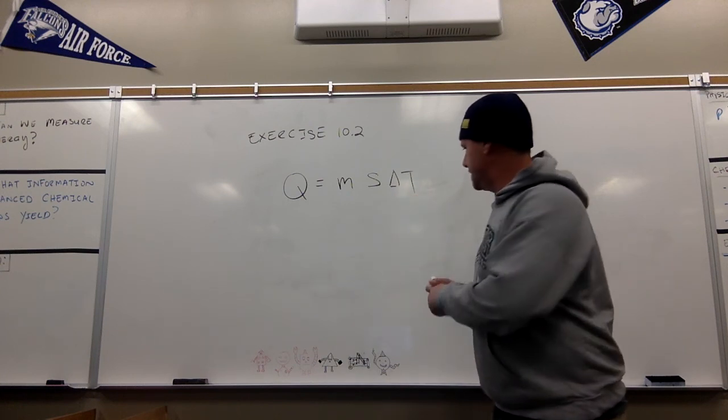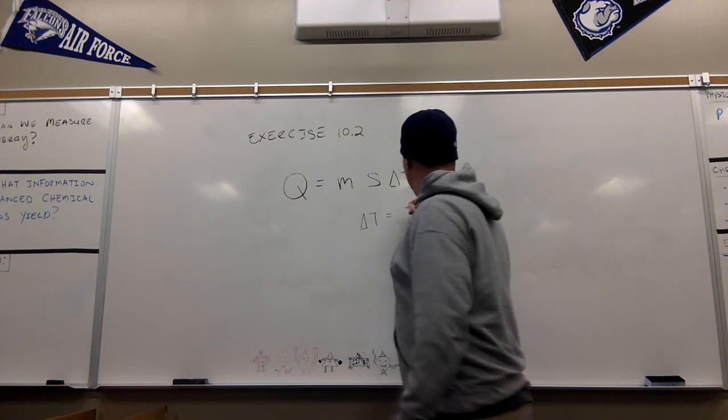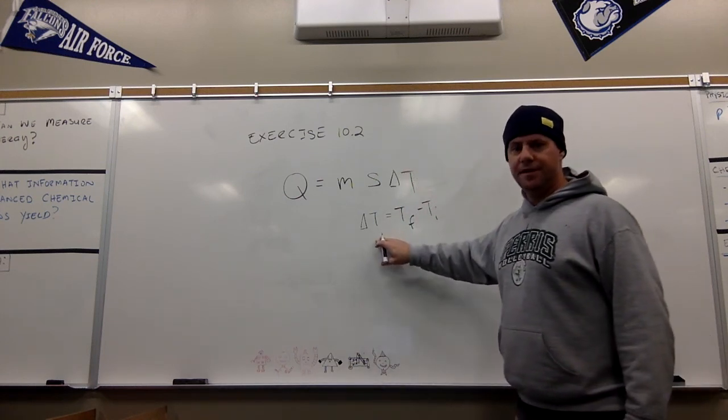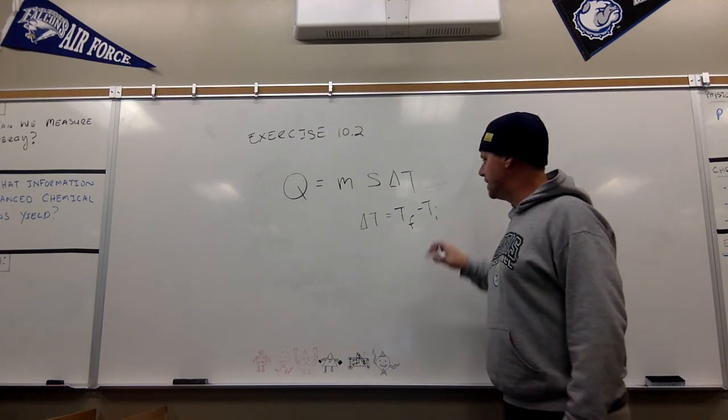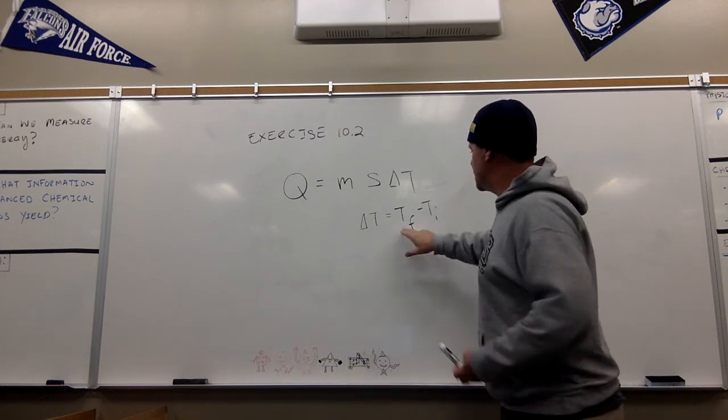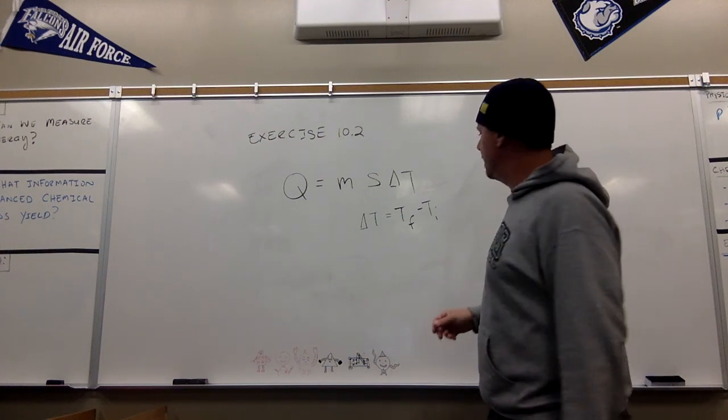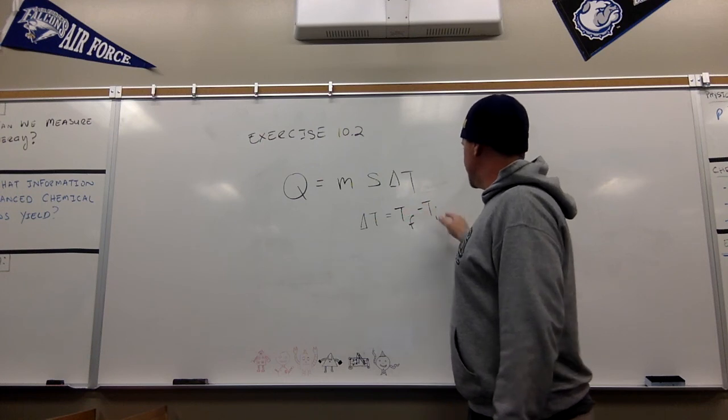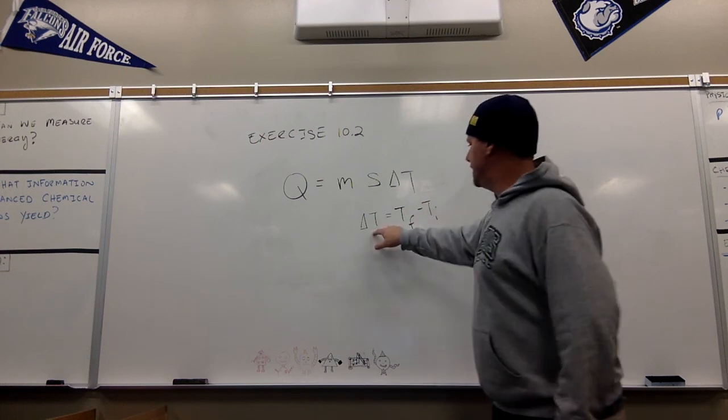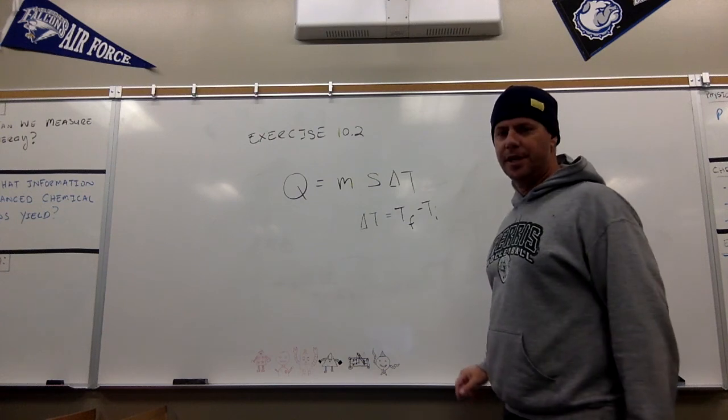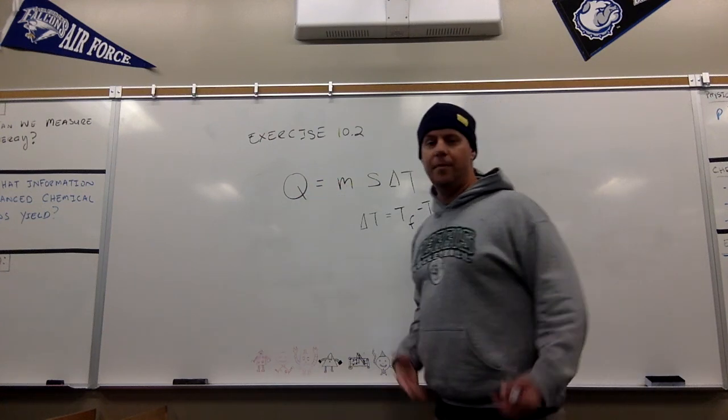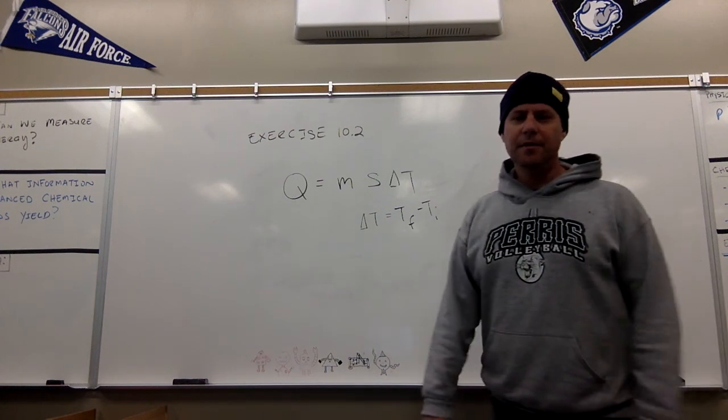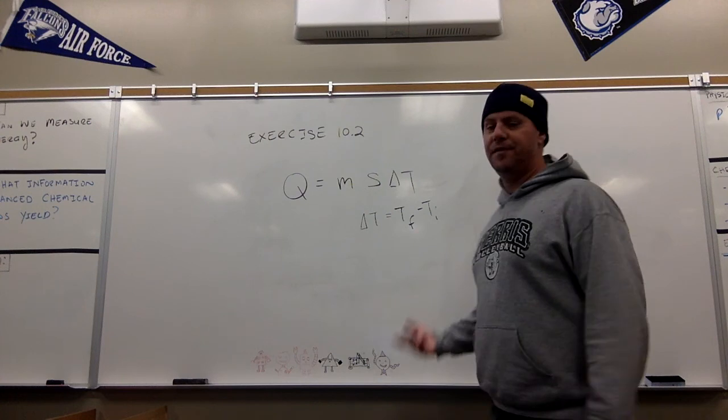So what that means is you take your final temperature and you subtract it from your initial temperature. So any delta function is always the final condition minus the initial condition. So whatever temperature happened last minus whatever temperature happened first. Notice that if your temperature final is greater than your temperature initial, you would get a positive delta T here. And that means you're going up in temperature. And that would require a positive amount of heat to do that because positive heat is heat entering the system. If it was a reaction, we would call it endothermic. But this is actually just a physical change.